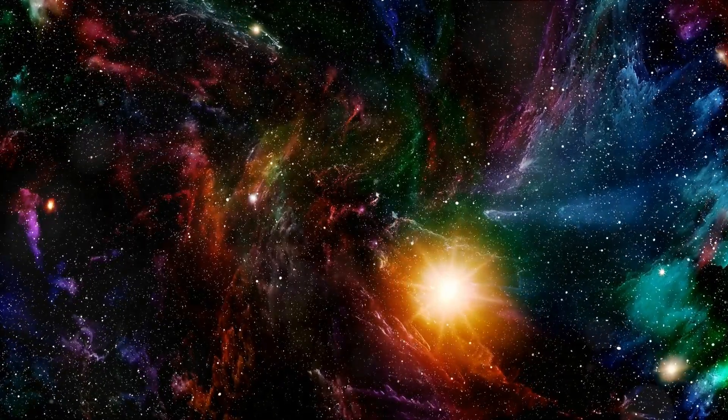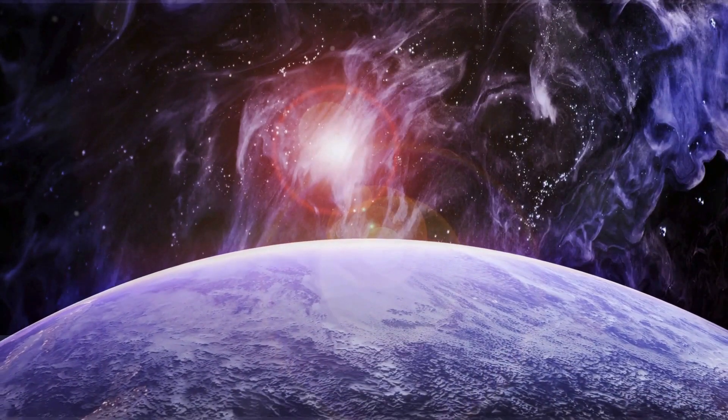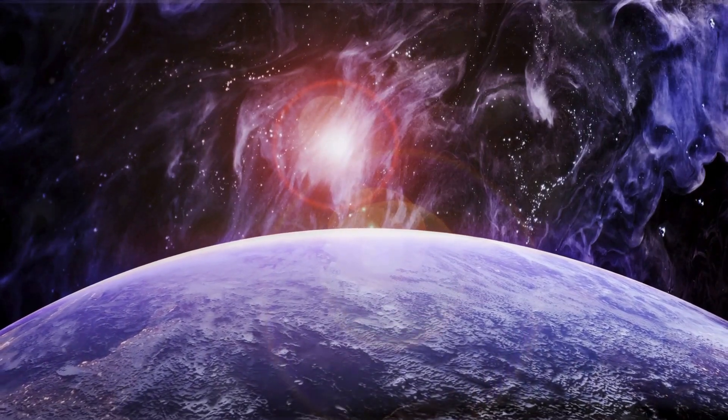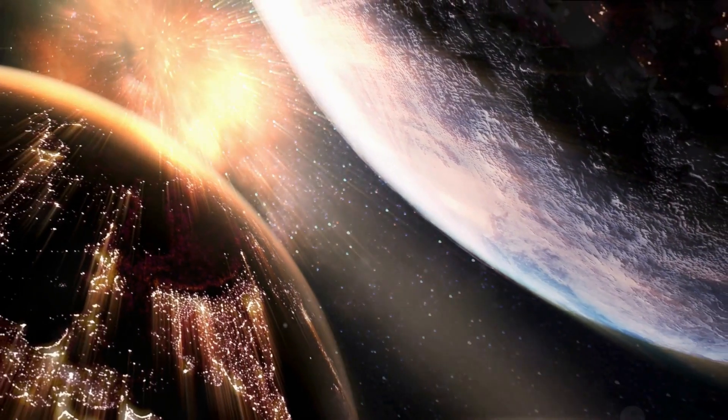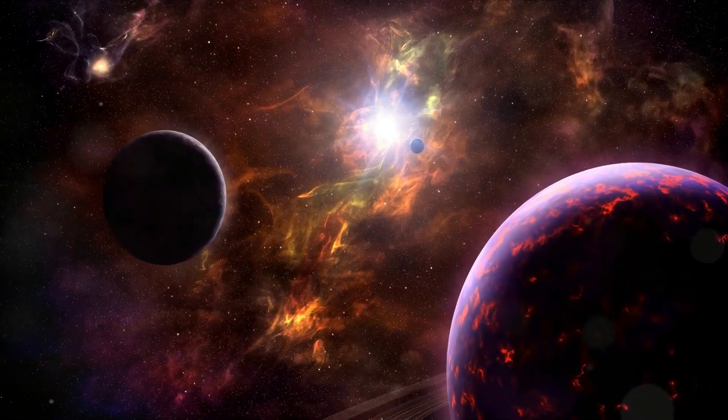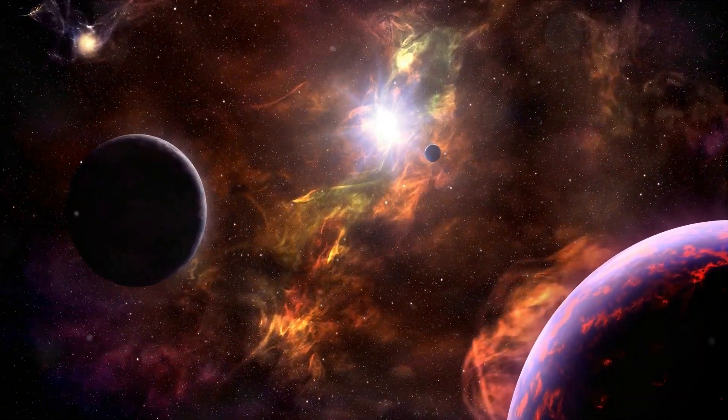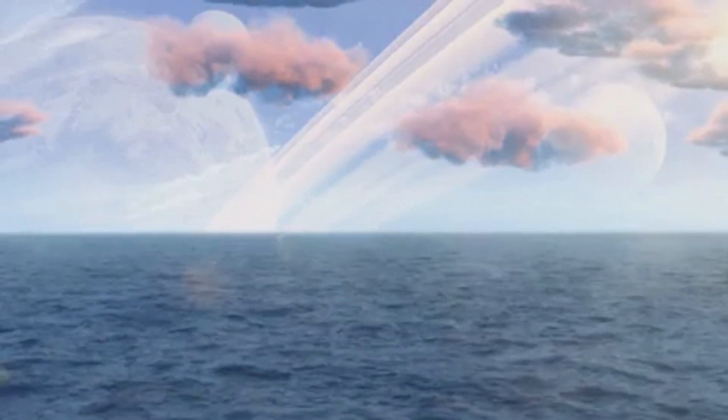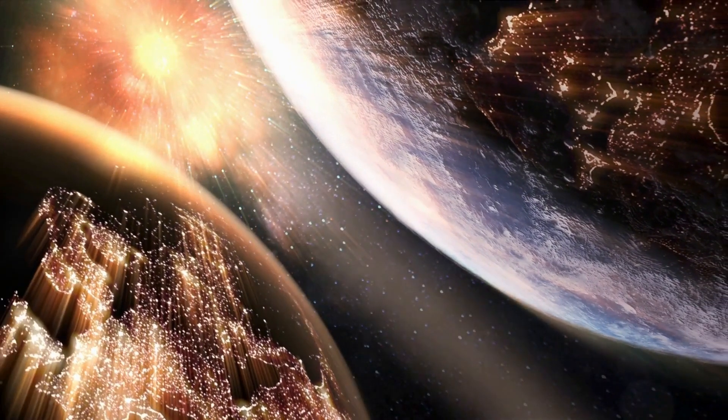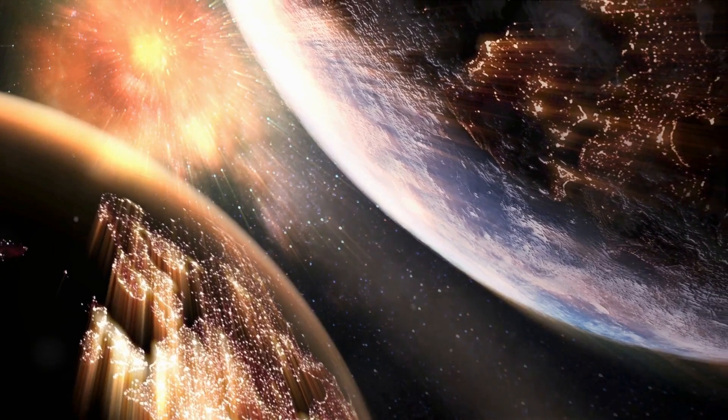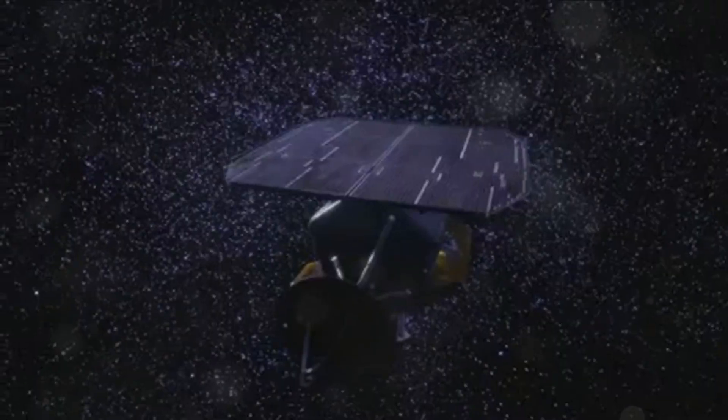TOI-700E is an intriguing entity. It's approximately 95% the size of Earth, and like our home planet, is likely rocky. Its similarities to Earth don't end there. This exoplanet is located within what is known as the habitable zone. This is the region around a star where conditions may be just right—not too hot, not too cold—for liquid water to exist on the surface of a planet. As we know, where there's water, there's the potential for life.